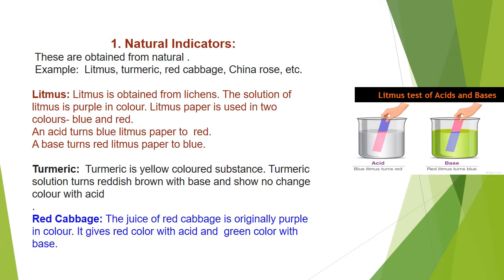Natural indicators are substances obtained from nature. Examples include litmus paper, turmeric, red cabbage, and China rose. Litmus is obtained from the lichen plant and its solution is originally purple in color. Litmus paper is used in two forms: blue and red. Acid turns blue litmus to red, and bases turn red litmus to blue.